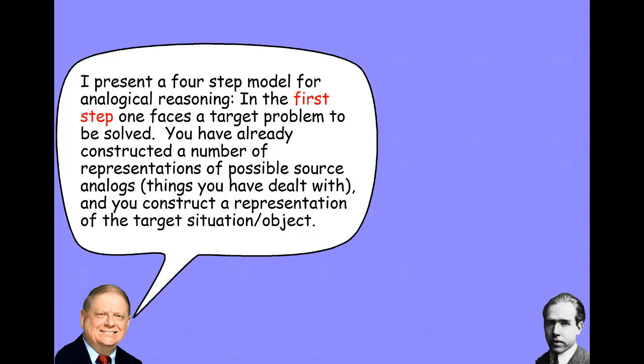Thagard's model for analogical reasoning involves four steps. In the first step, you face a target problem that you need to solve. You've never encountered this problem before, and so you don't have any script or schema for how to go about solving it. But you already have a whole bunch of constructed representations of possible source analogs - that is, problems you have solved, things that you're familiar with. And so, what you want to do is compare those source analogs to the target analog and see if you can find one that has sufficient similarities.